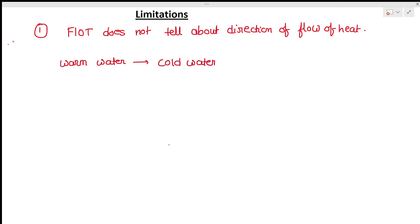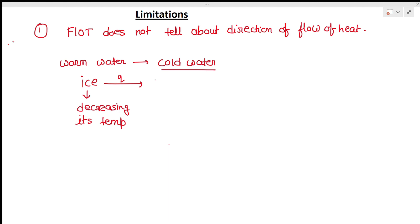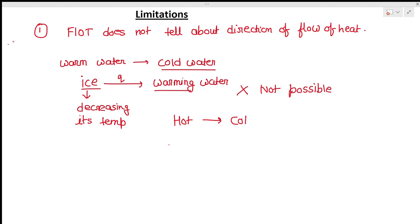If warm and cold water are mixed, the cold water gains energy and gets hot. But it is impossible to extract heat from ice by cooling it further and supply that heat to warm water — heat cannot flow from a cold body to a hot body spontaneously. The first law does not tell us about this direction of heat flow.